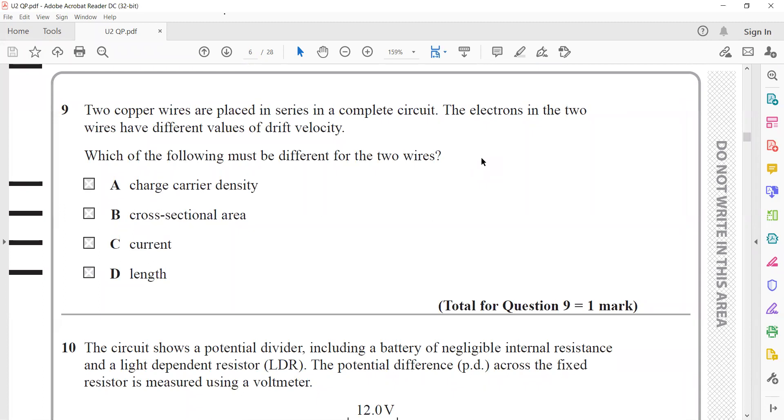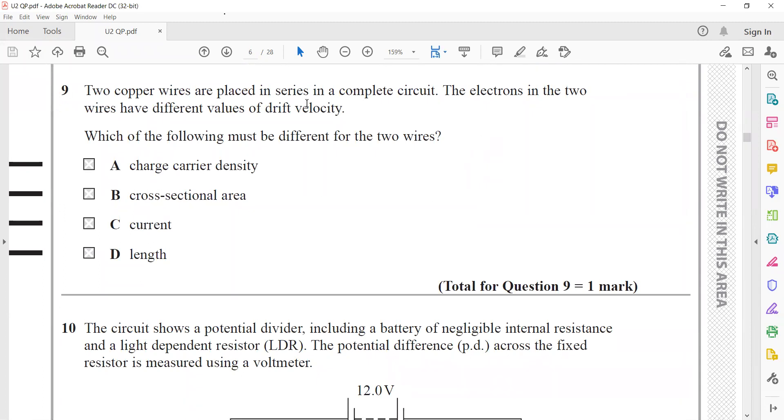Two copper wires are placed in series and the electrons in the two wires have different drift speeds. Which of the following must be different? We have the formula I equals n A v q, where q is the charge, which is constant because both are copper wires. So n will be constant. They are connected in series, so current is constant. The product of A and v should be the same. So the one which is having the higher drift speed should have a smaller area, and the one which is having smaller drift speed should have a larger area. So the cross-sectional area should be different.